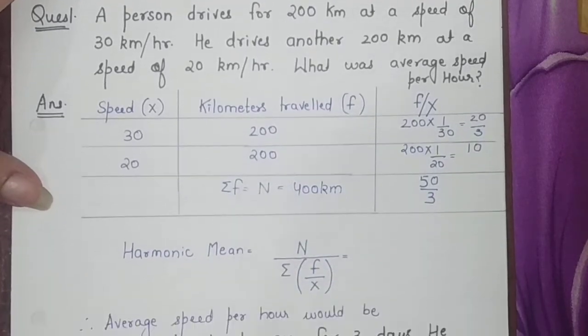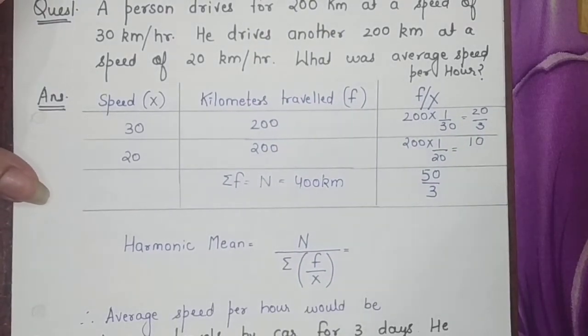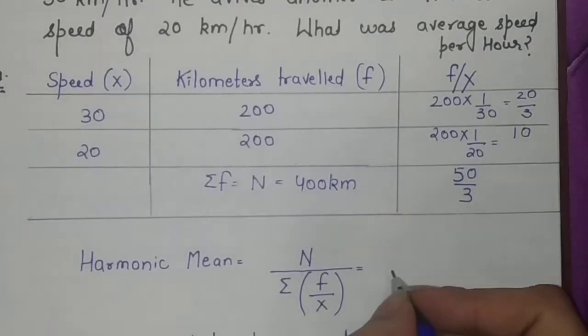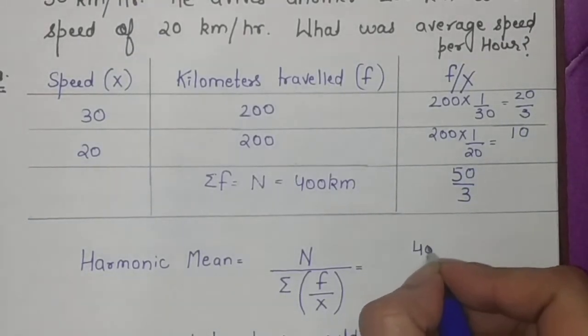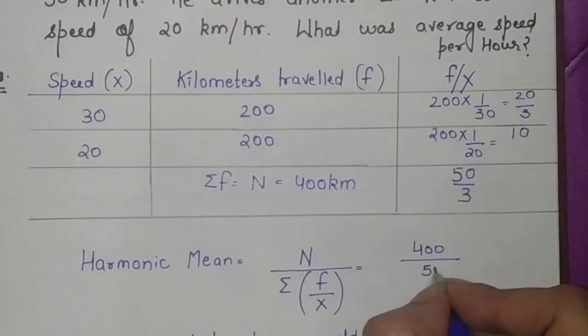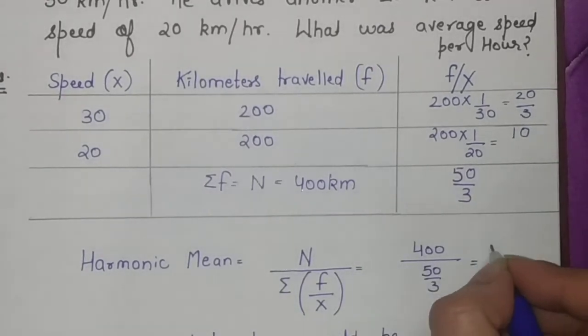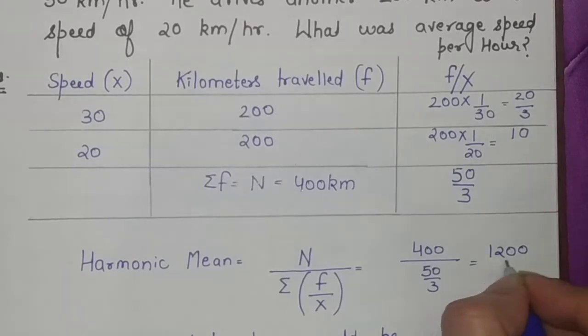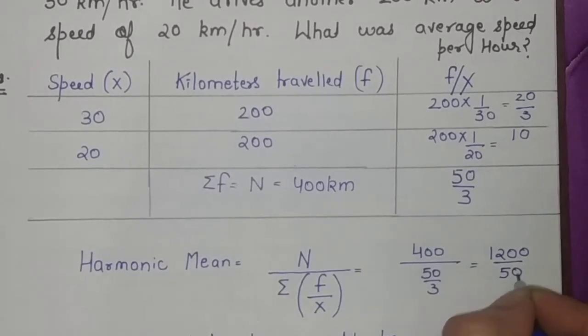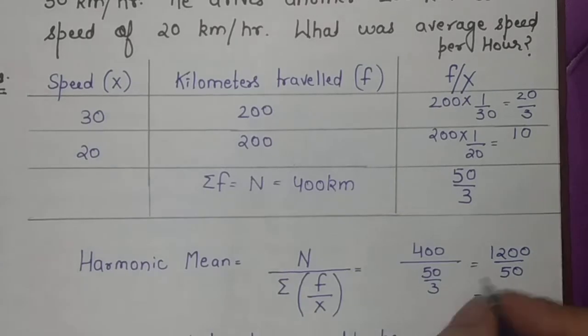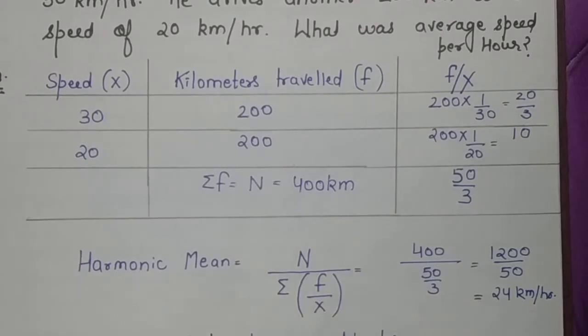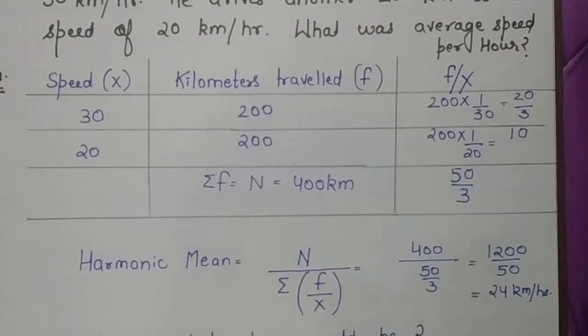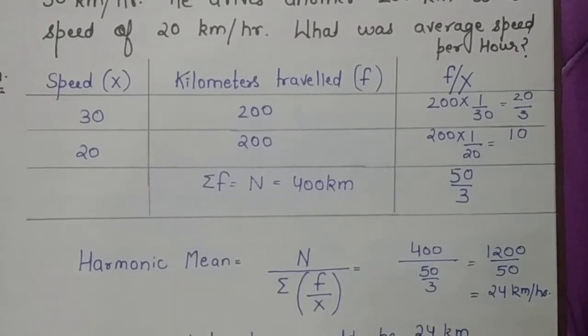Harmonic mean will be derived using the formula n upon sigma f/x, that is 400 upon 50 by 3, or you can say it is 1200 divided by 50, which becomes 24 kilometers per hour. So average speed per hour should be 24 kilometers per hour.